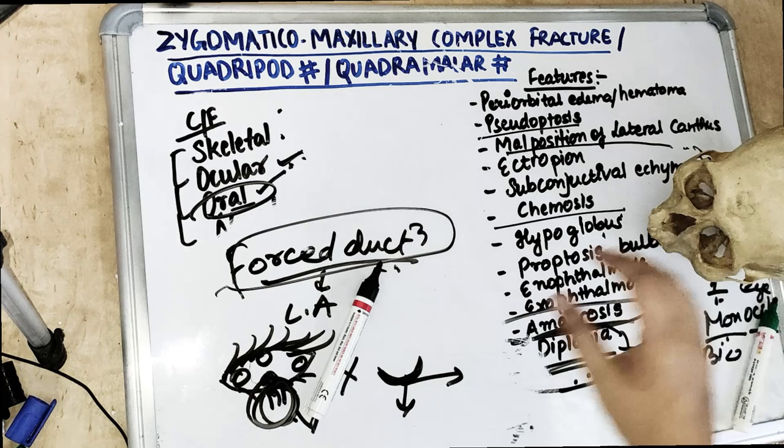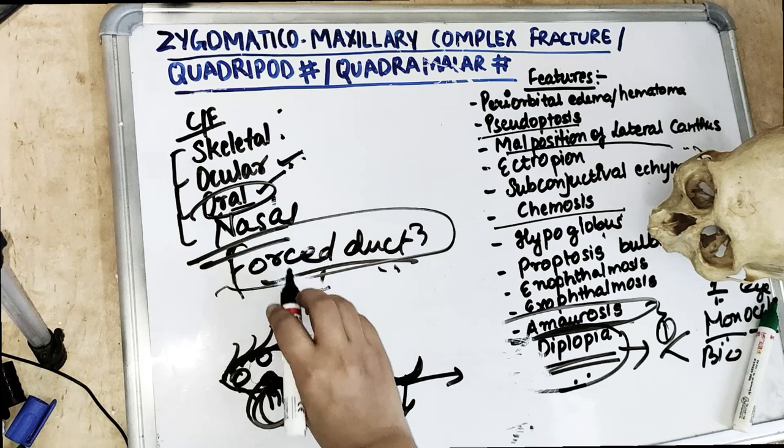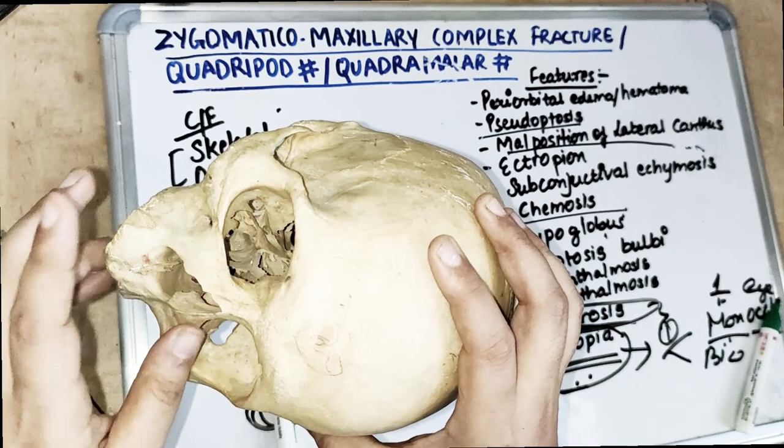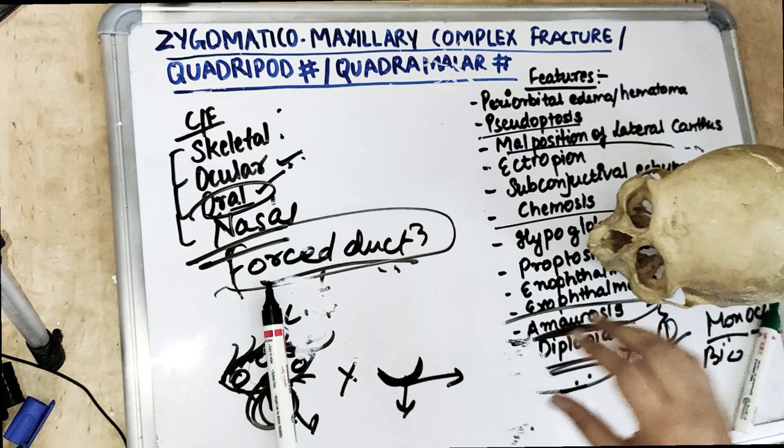Nasal symptoms: because of the fracture of the nasal bone, if there is a unilateral zygomatic fracture there is going to be ipsilateral epistaxis and also haematosinus.